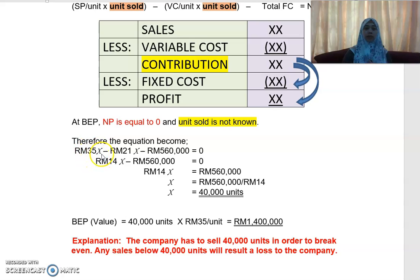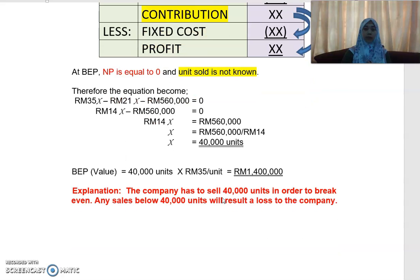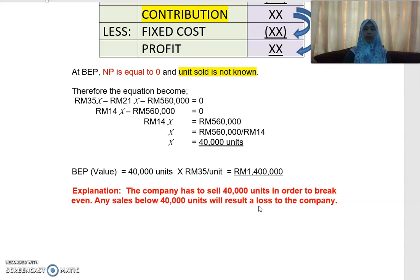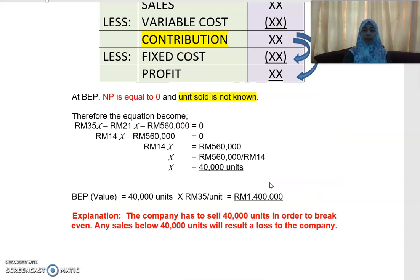Plugging in the figures: 35x minus 21x minus 560,000 equals zero. So 14x equals 560,000, giving x equals 40,000 units as the break-even point. In value, 40,000 units times RM35 equals RM1.4 million. This means the company must sell 40,000 units to break even. Currently producing 64,000 units, any sales below 40,000 would result in a loss.